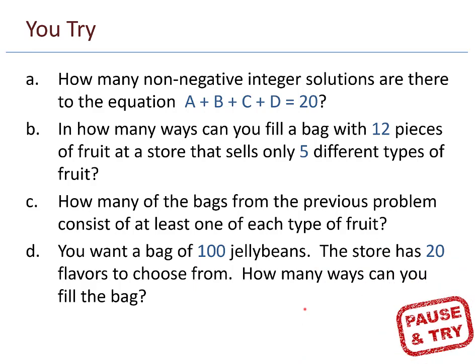All right. Here is one more chance for you to shine. Give these problems your best effort. Pause the video, and then start it up again when you are ready to check your work. Let's take a look. How many non-negative integer solutions are there to the equation A plus B plus C plus D equals 20? So I have 20 objects plus three dividers, 23 choose three, 1771.